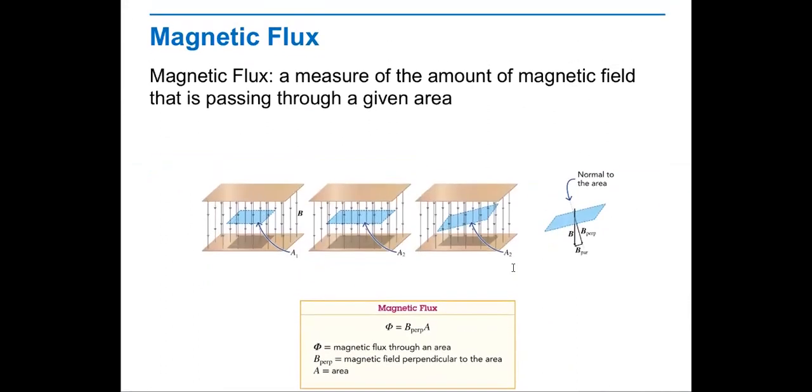We will learn what is the definition of magnetic flux. It's a measure of the amount of a magnetic field that is passing through a given area. The rule for it is a magnetic flux through an area is equal to the magnetic field perpendicular to the area times the area itself.